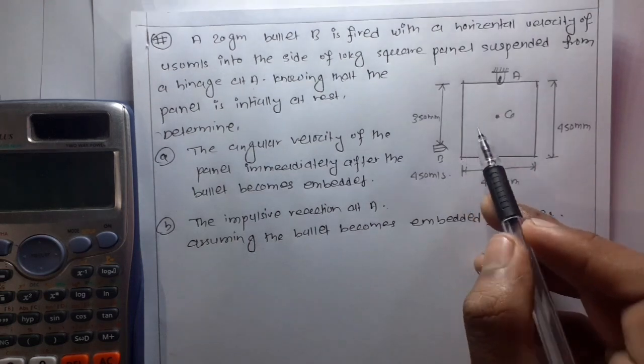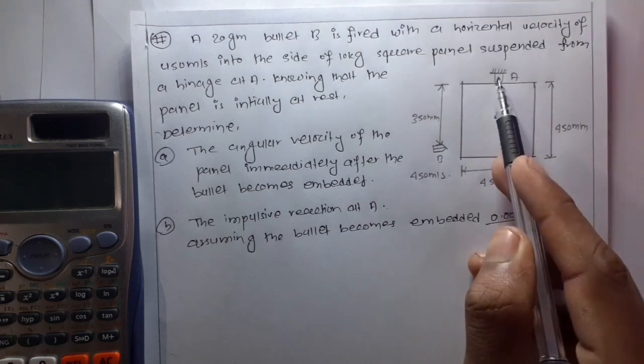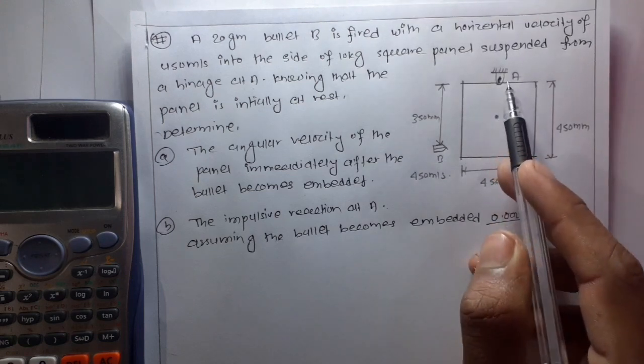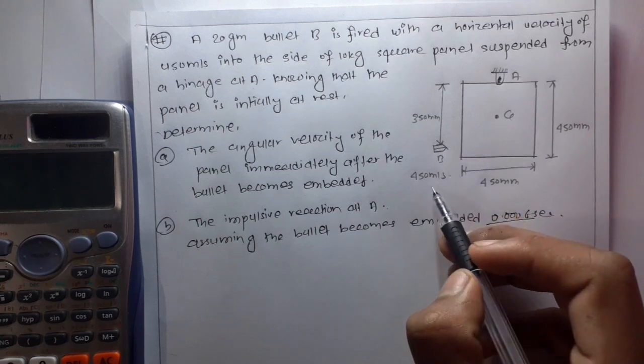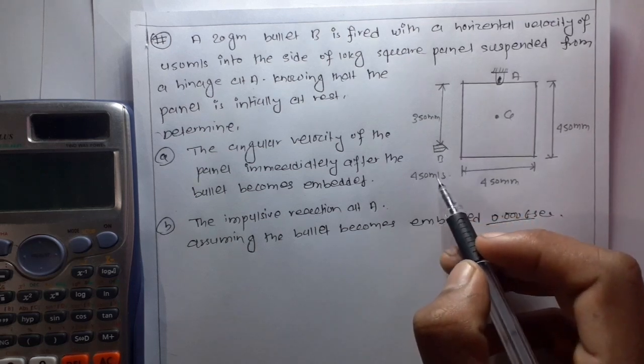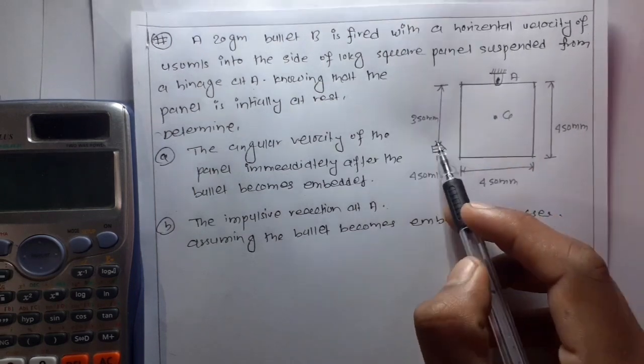So the question is, it is a 450 by 450 square panel which is suspended, and the bullet is fired with a velocity of 450 meters per second. The point is 350 mm from the top.